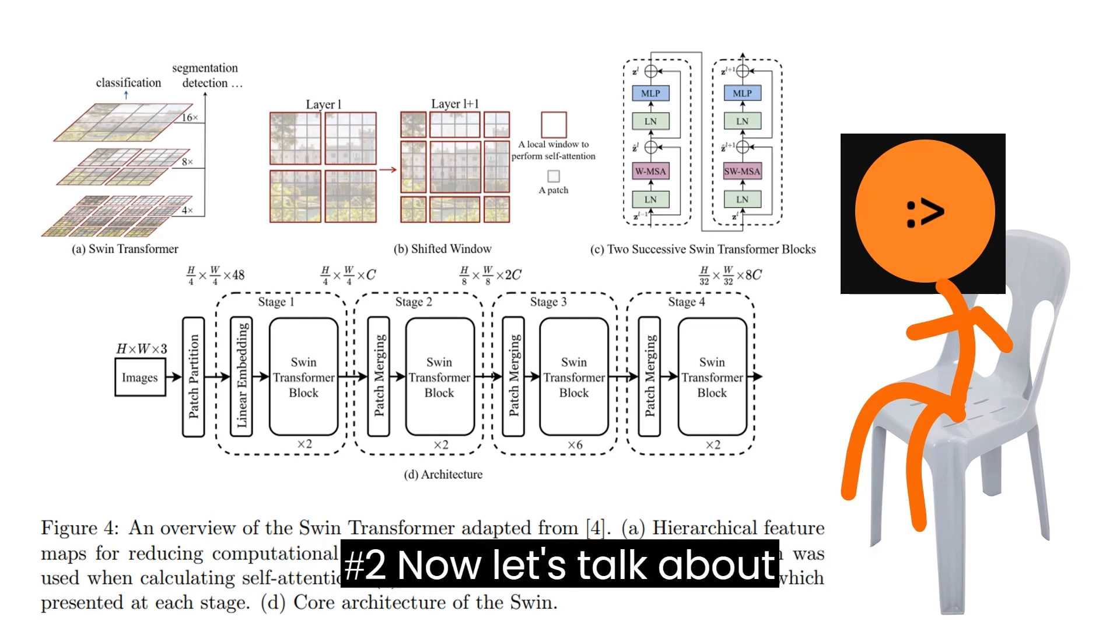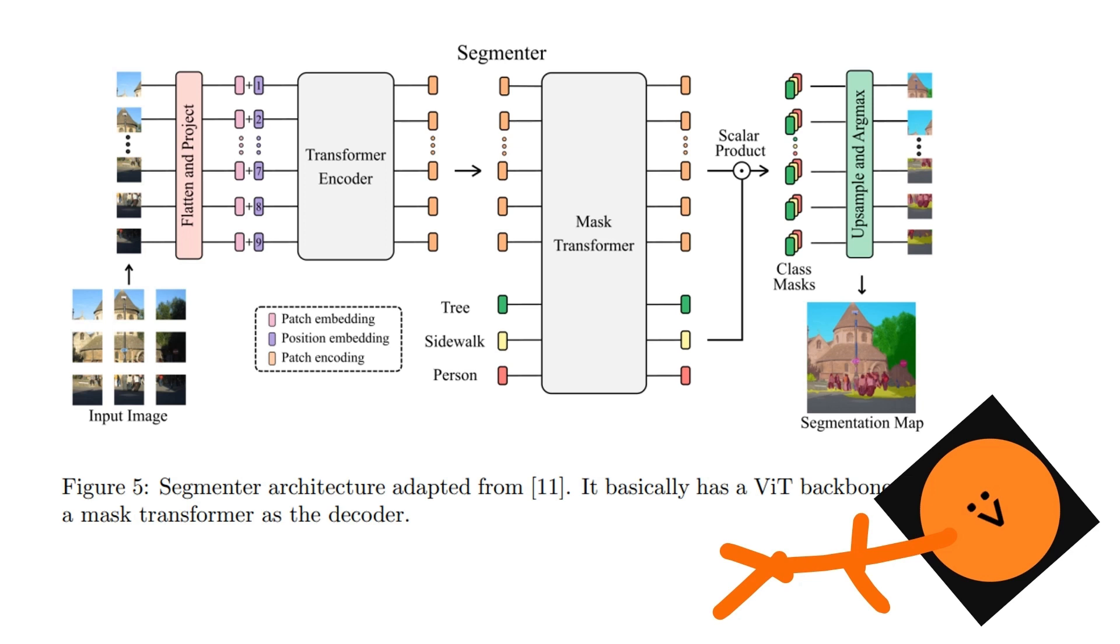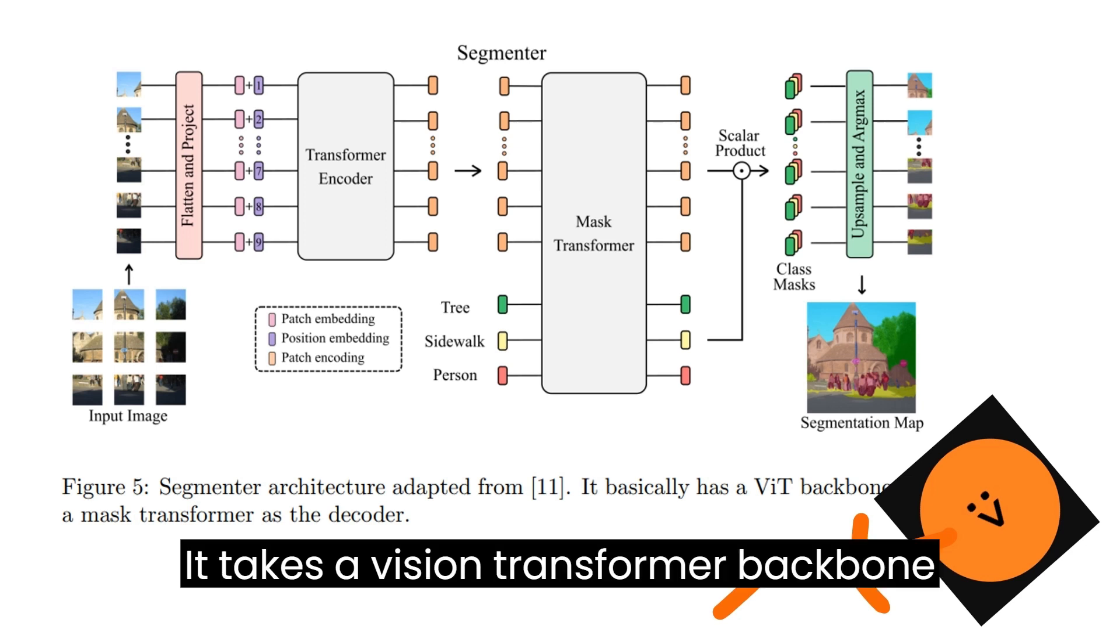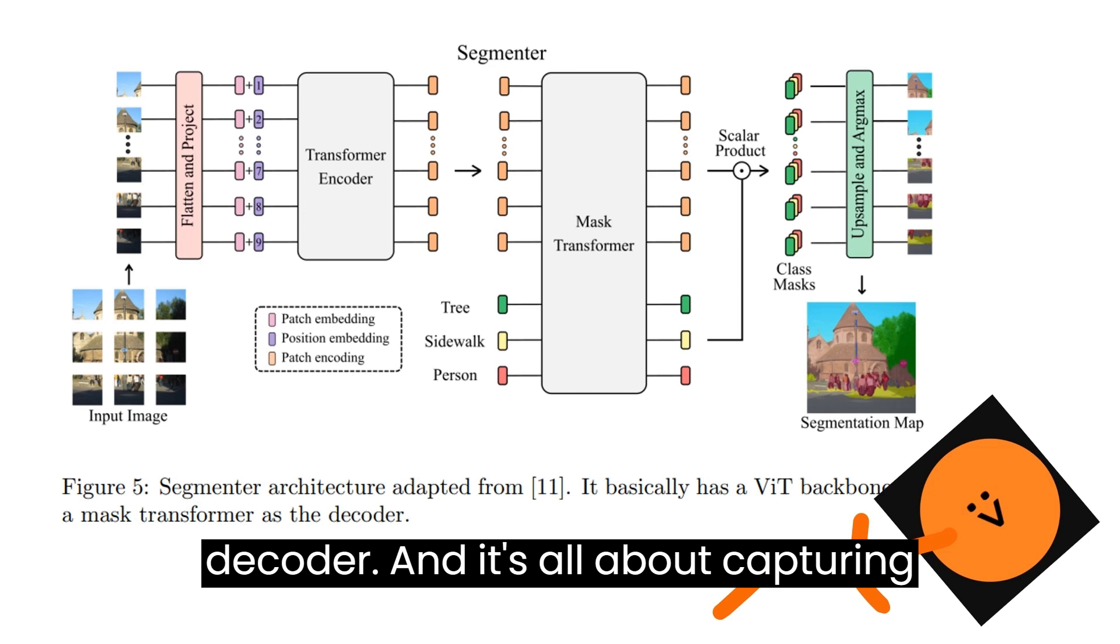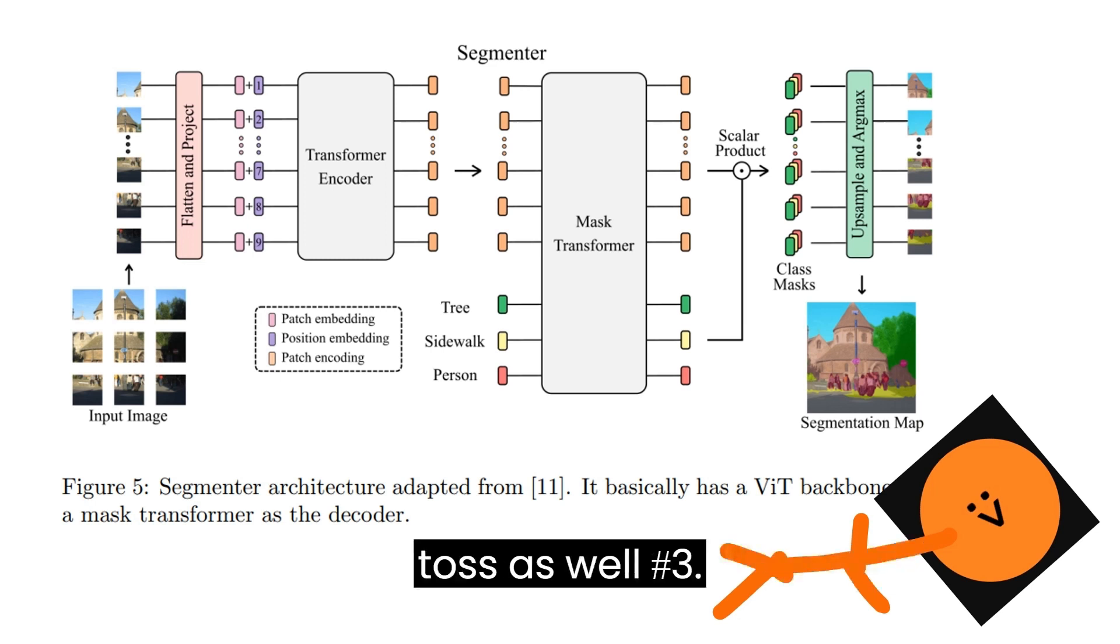Number two, now let's talk about Segmenter, a pure transformer-based approach with no more convolution. It takes a vision transformer backbone and uses a mask transformer as the decoder, and it's all about capturing that global context. And hey, it flexes its muscle on panoptic segmentation tasks as well.